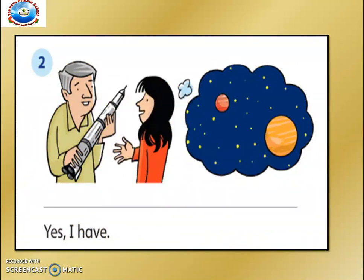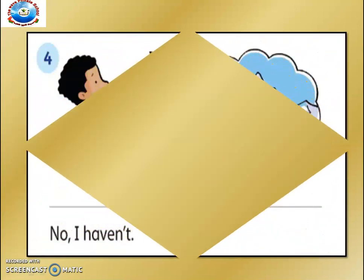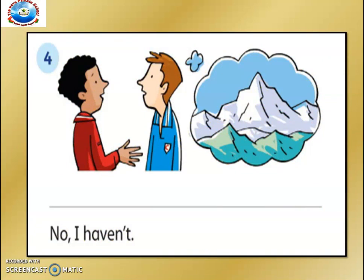The next image shows a girl asking a man — you can see an image of space — so the question is: 'Have you ever been to space? Yes, I have.' In the following picture, you can see two boys and the picture is about mountains, so the question is: 'Have you ever been to some mountains? No, I haven't.'